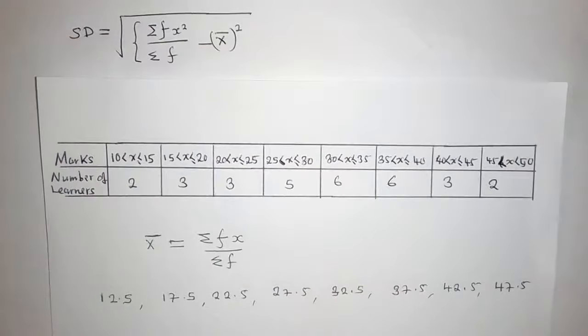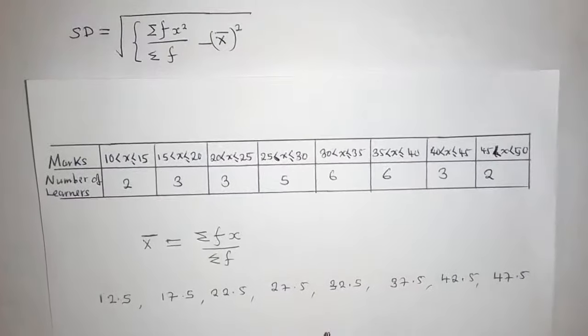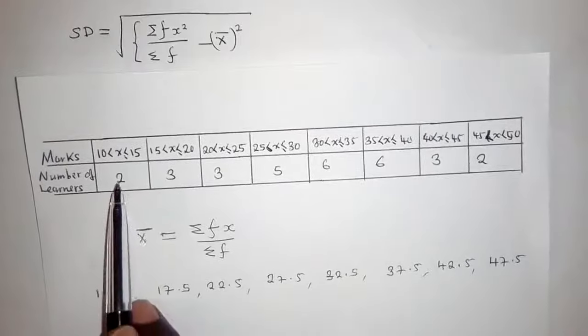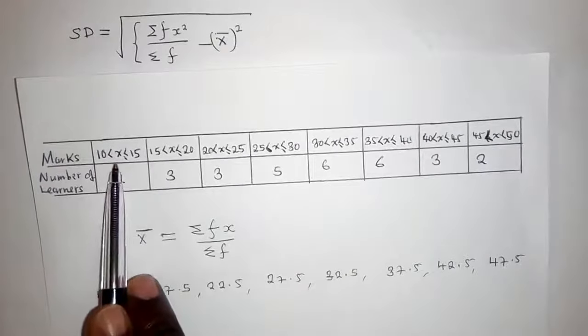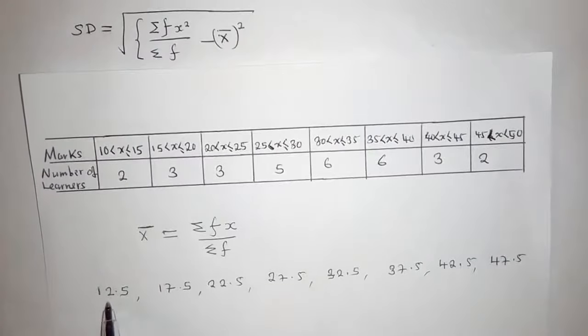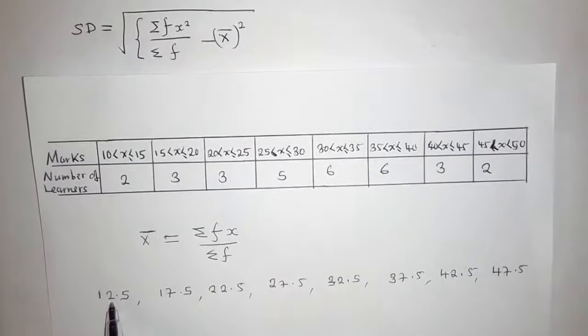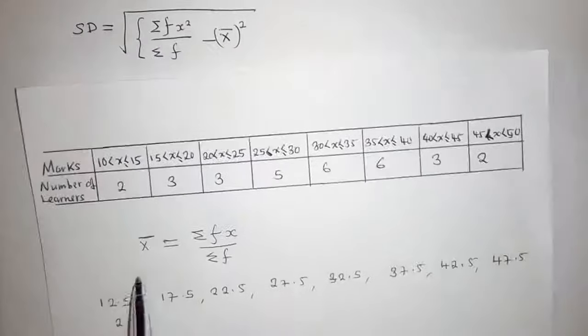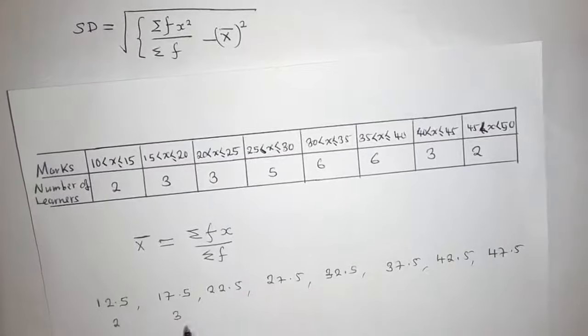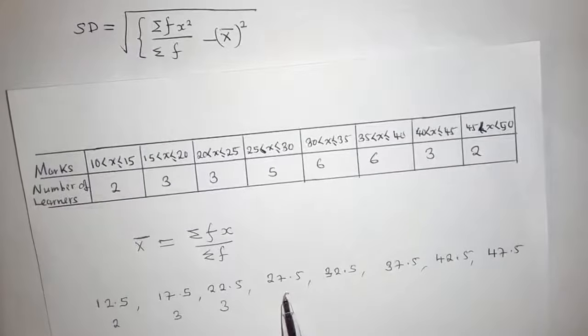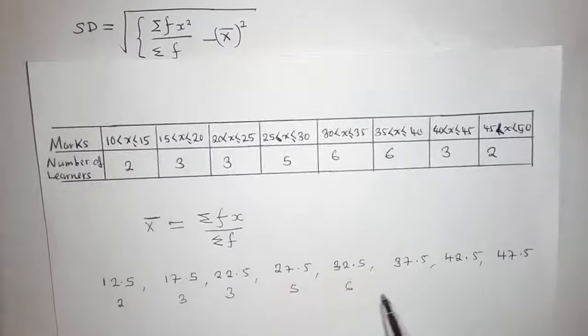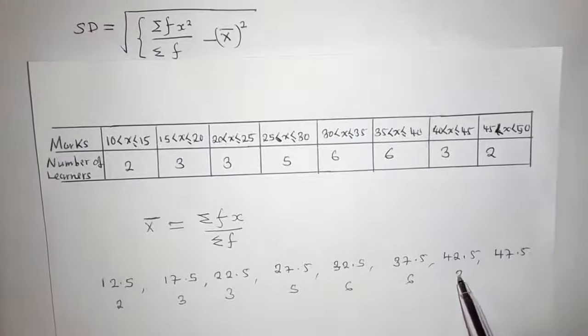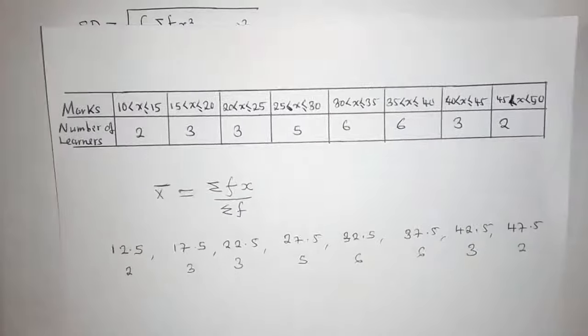Now since we've found these numbers, we check the frequencies. Between 10 and 15, the midpoint is 12.5 and the frequency is 2. The other frequencies are 3, 3, 5, 6, 6, 3, and 2.